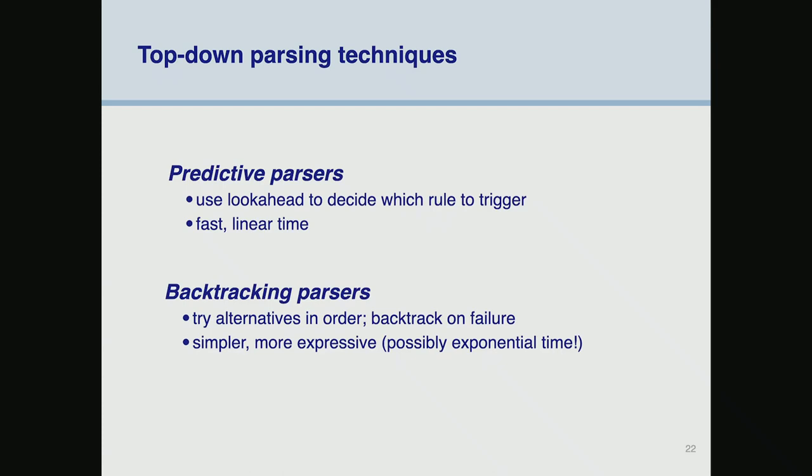If you have a predictive parser you use lookahead to decide which rule to trigger — it's fast and linear time. Backtracking parsers, like in Prolog or with PEGs, try alternatives and if they fail they backtrack and try another alternative, which can be expensive. It's simple and very expressive — you have fewer constraints on designing your grammar — very convenient, but it could be exponential time if you really mess up the design of your parser.